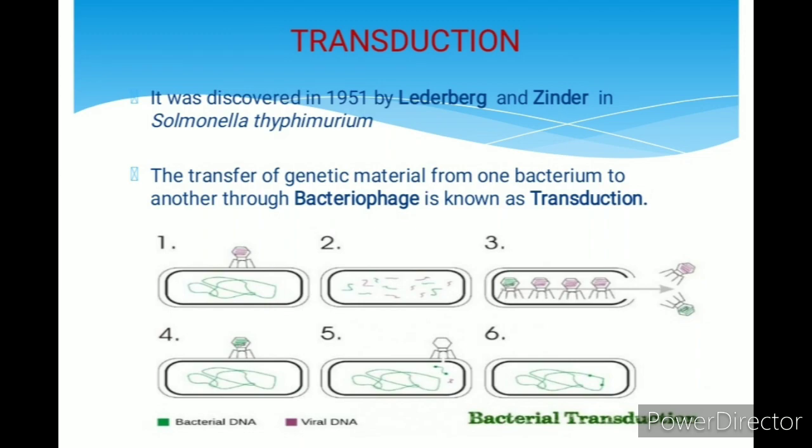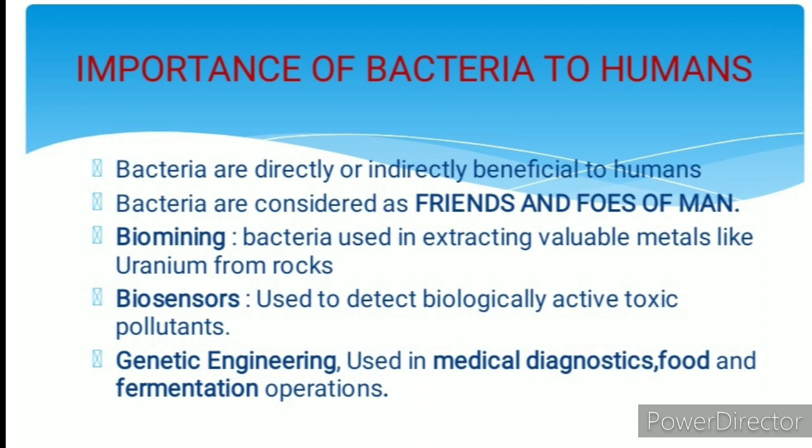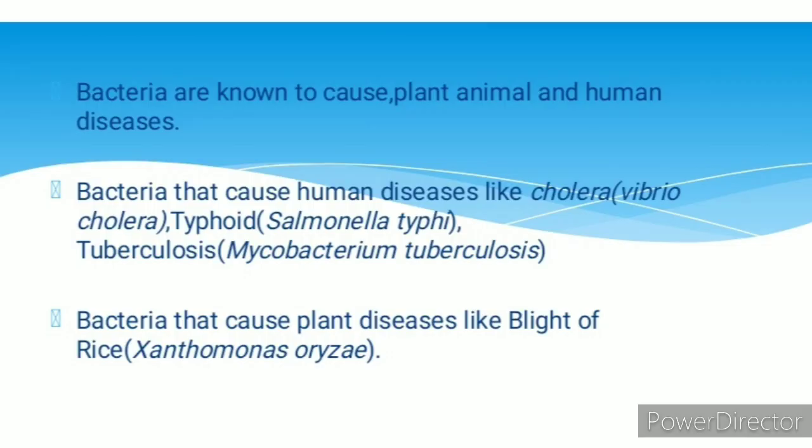The importance of bacteria to human beings: bacteria are directly or indirectly beneficial to human beings, which is why they are considered both friends and foes of man. Important roles include biomining — bacteria are used in extraction of valuable metals like uranium from rocks — and as biosensors to detect biologically active toxic pollutants in the environment. They are also used in genetic engineering, medical diagnostics, food, and fermentation operations. However, bacteria also cause diseases in plants, animals, and humans.